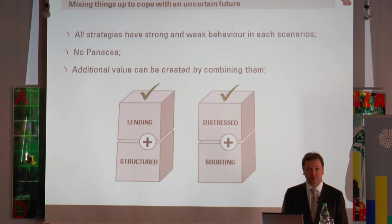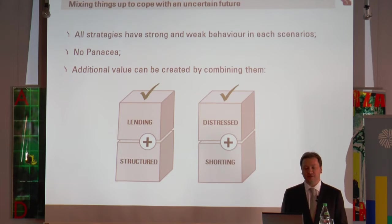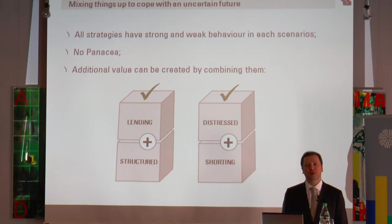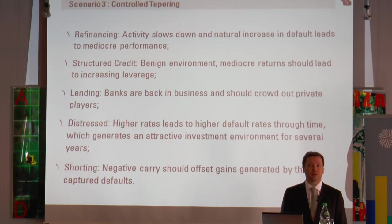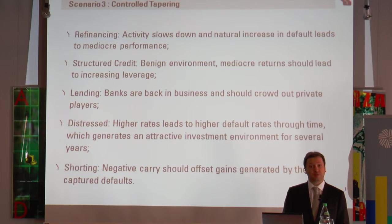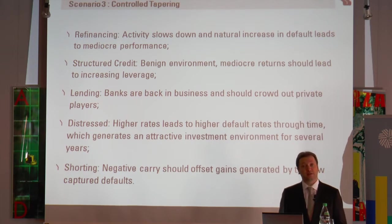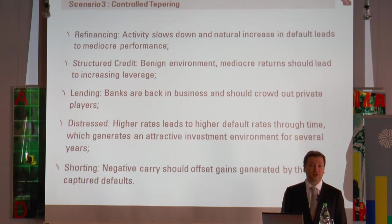What do you consider the most probable scenario? I have a hard time believing that the central banks don't know what they are doing. I think they know what they are doing and I do not bet against them. I think scenario three — controlled tapering — is the most likely, but there is a definite risk of them failing. If you have to choose a most probable, I would say these very intelligent people with a huge army of economists and scientists should be able to pull it off.